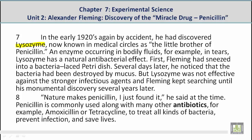And Fleming kept searching until his monumental discovery several years later. Paragraph 8: "Nature makes penicillin; I just found it," he said at the time. Penicillin is commonly used along with many other antibiotics — for example, amoxicillin or tetracycline — to treat all kinds of bacteria, prevent infection, and save lives.